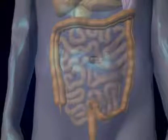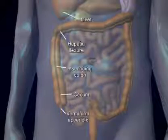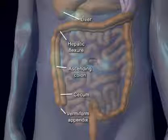The first part of the large intestine is the cecum. It is located in the lower right quadrant. Attached to the cecum is the appendix.